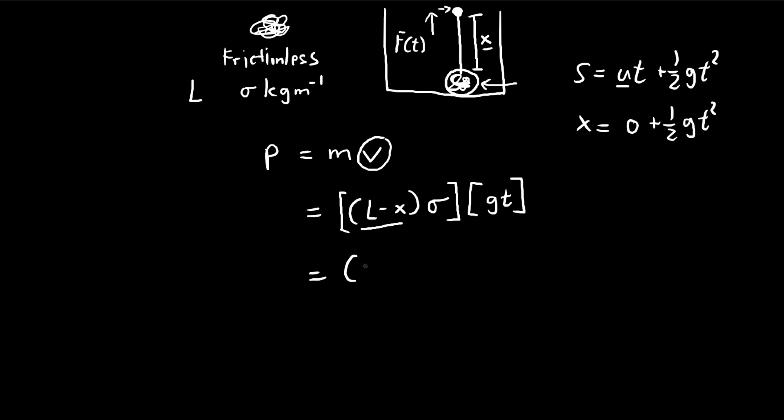So we can just substitute this right in. We get the momentum as a function involving t cubed. So what do we do next? We take the derivative of momentum with respect to time. And why do we do that? We do that because the derivative of momentum with respect to time is equal to force. So the change of momentum is equal to force.